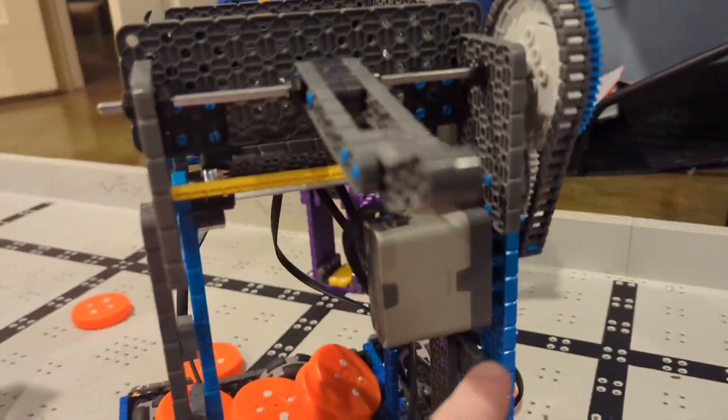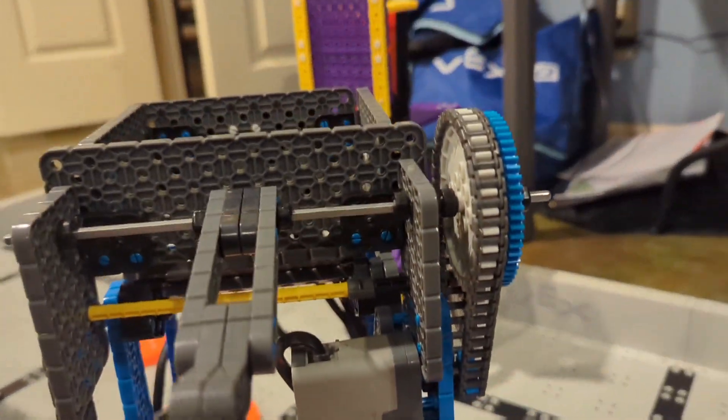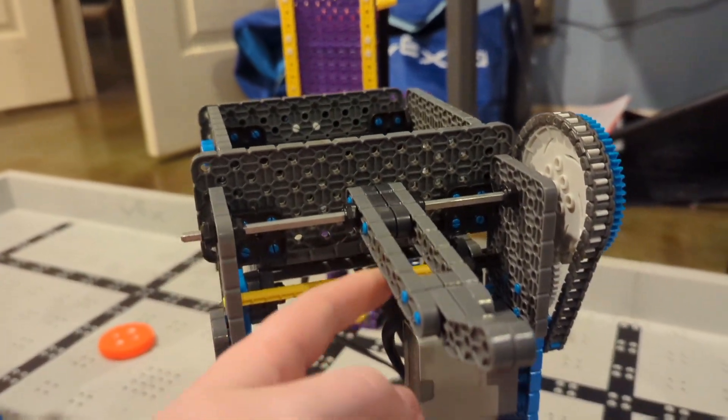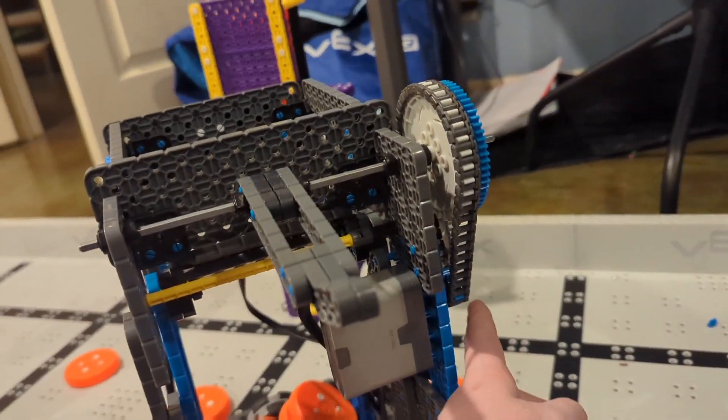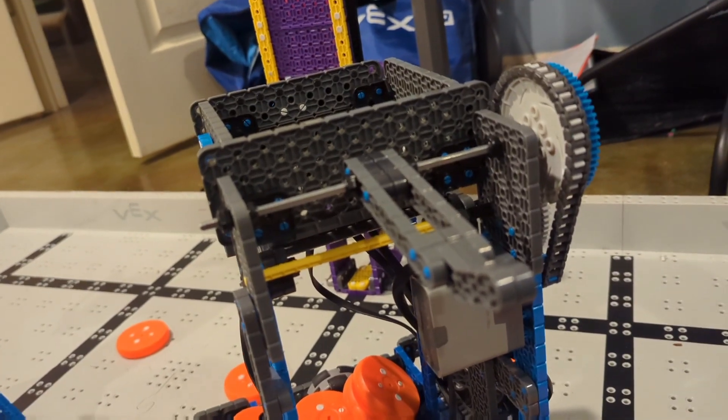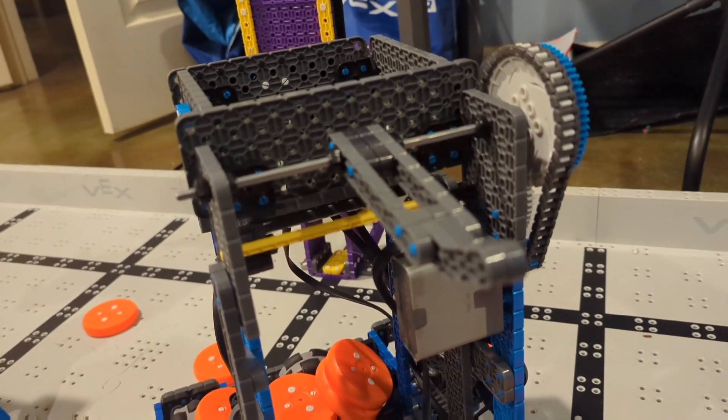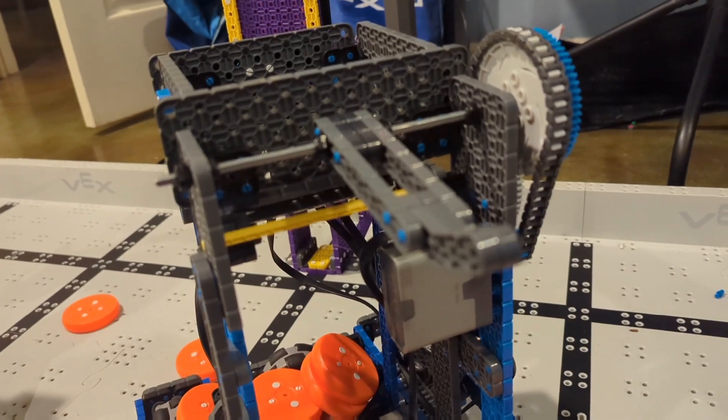So to power this, we have a motor that goes into this small sprocket gear that goes all the way up to this big sprocket gear, and then it goes right into the little mechanism here. And we do that so we have a bunch of torque, because lifting the blue dispenser up from the bottom takes a lot of torque.